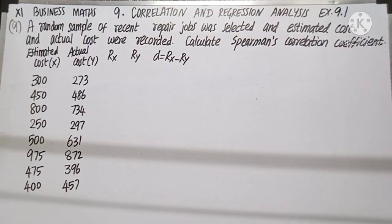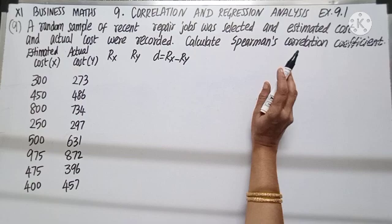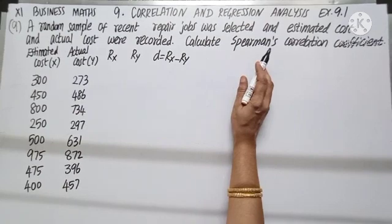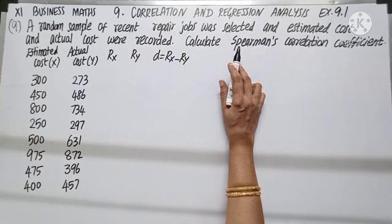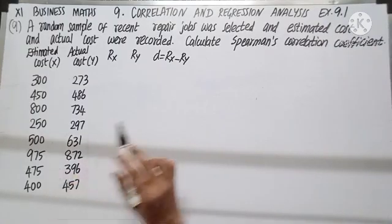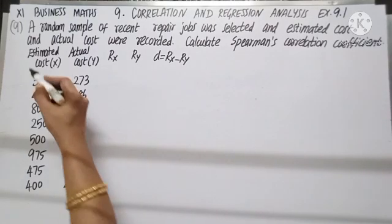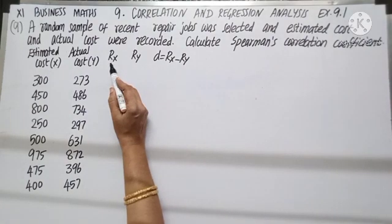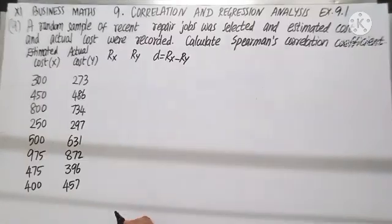Question number 9: A random sample of recent repair jobs was selected. Estimated cost and actual cost were recorded. Calculate Spearman's correlation coefficient. Notice the question — they have not mentioned rank correlation, but they have mentioned Spearman's name. You should remember he defined rank correlation coefficient. So let us allot ranks and proceed with his formula. Taking estimated cost as X and actual cost as Y, let us give Rx and Ry, the ranks for X and Y, in ascending order.